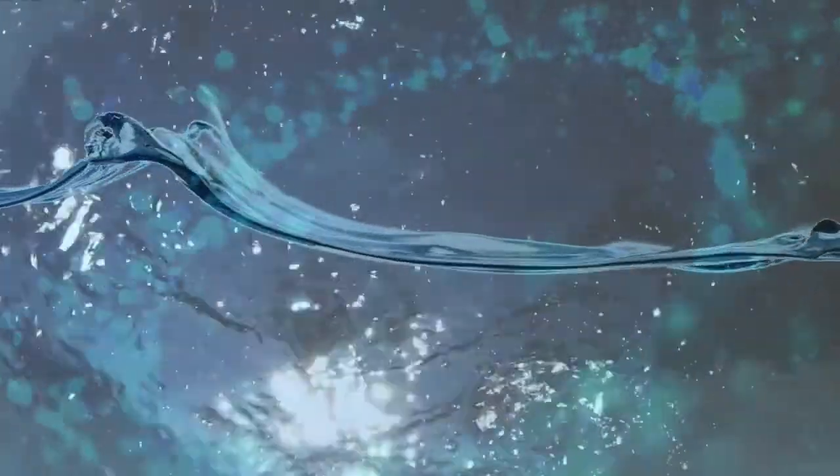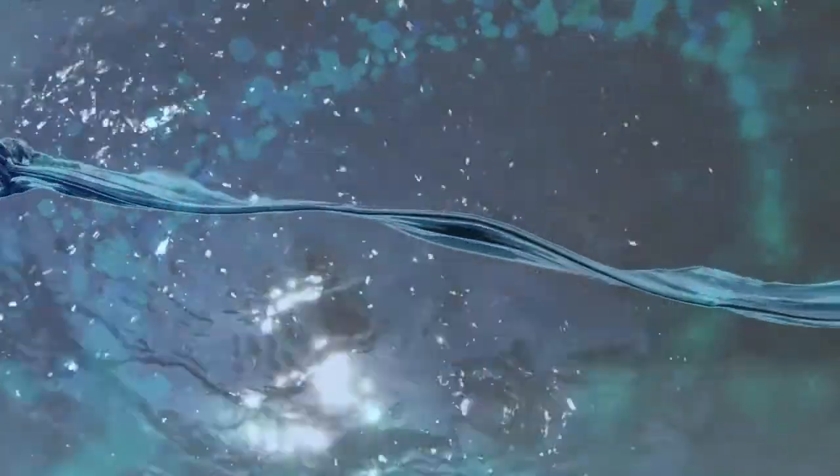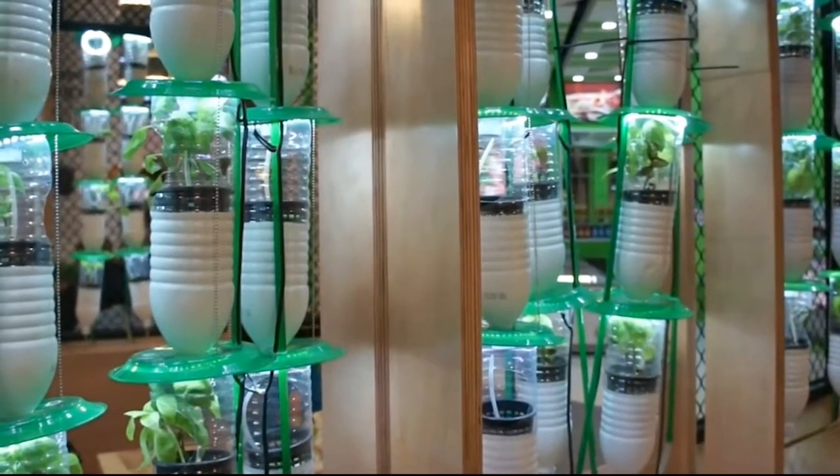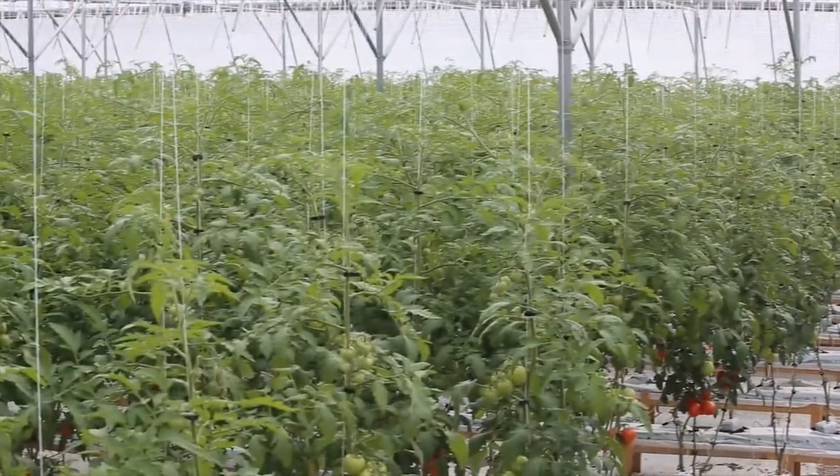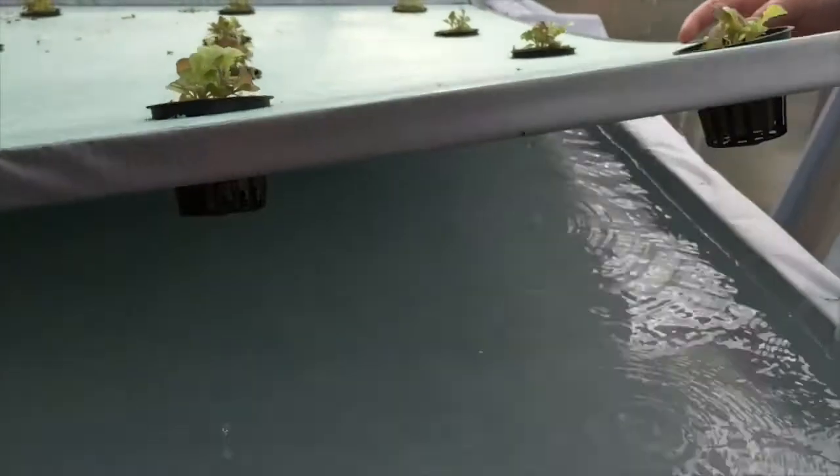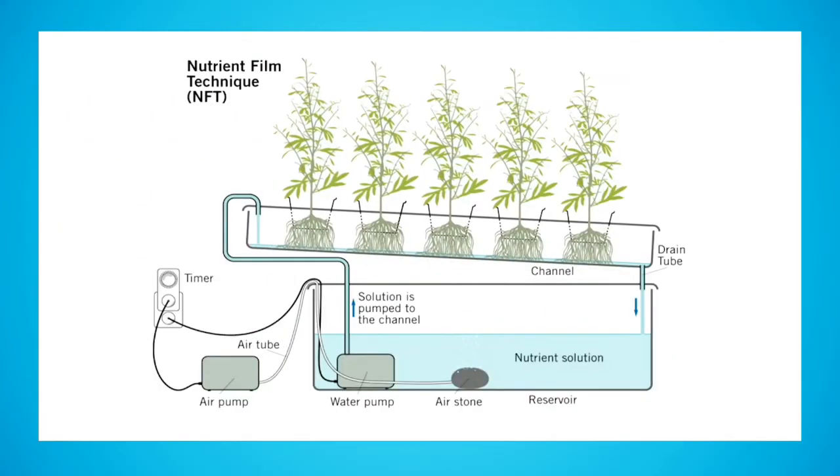The word hydroponic comes from the Latin word that means working with water. Simply put, hydroponic gardening is the art of growing plants without soil. Most people assume that with hydroponics, plants are grown with their roots directly in water and with no other growing medium. But this is just one type of hydroponic gardening. It's called the nutrient film technique, or NFT.